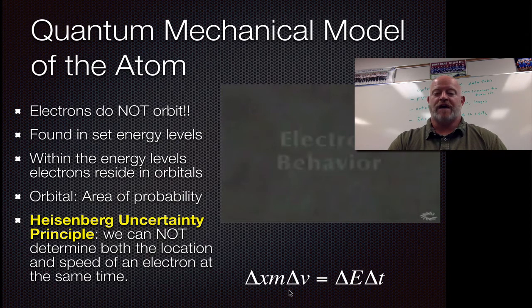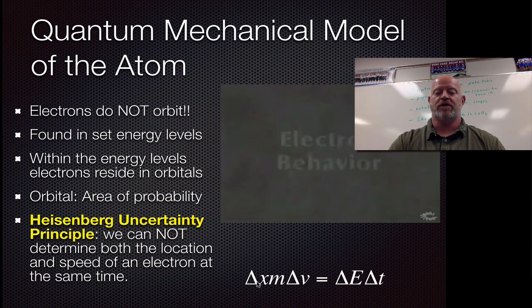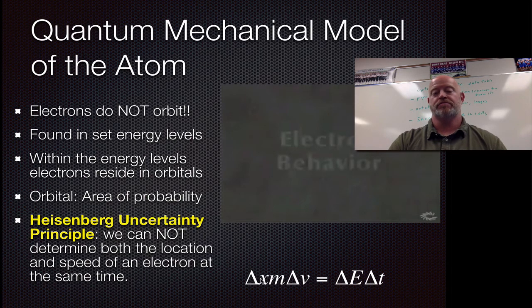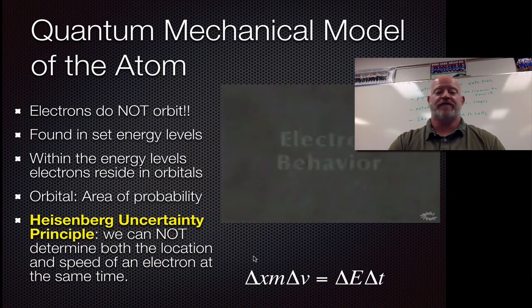If we bring the change in position down to zero, the change in velocity has to go to infinity. If we change the change in velocity down to zero so we know the exact velocity, our position goes to infinity. Ultimately we can't figure out location and speed at the same time. The best we can do is area of probability.